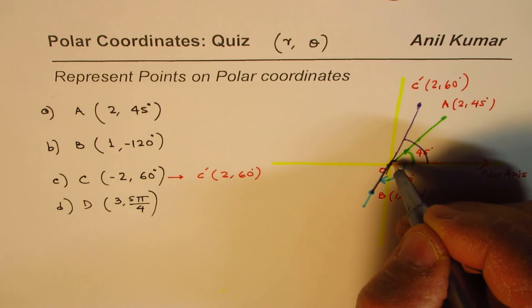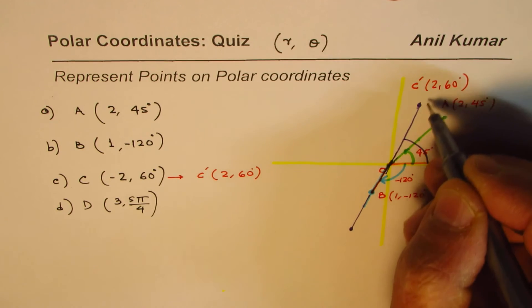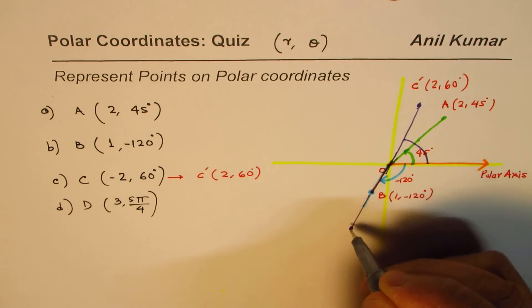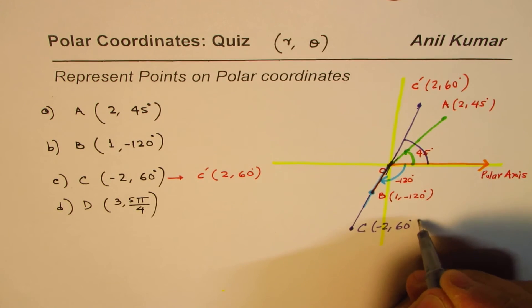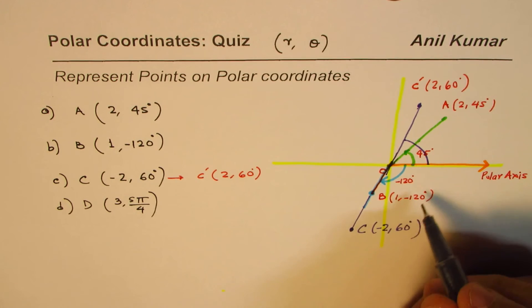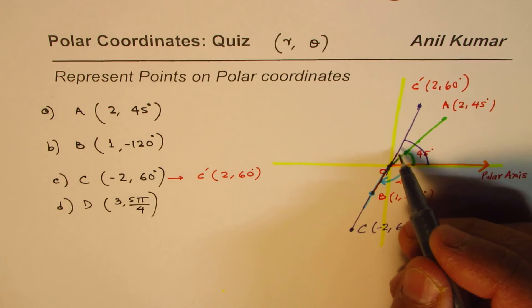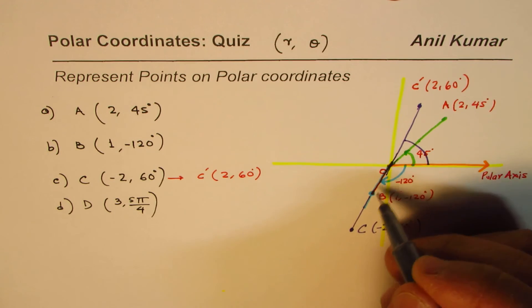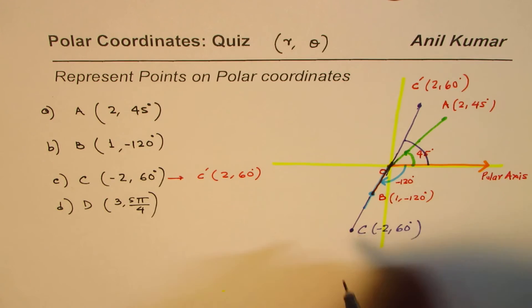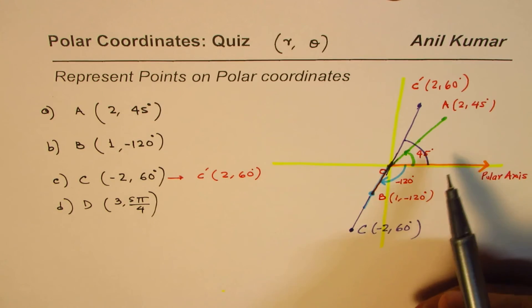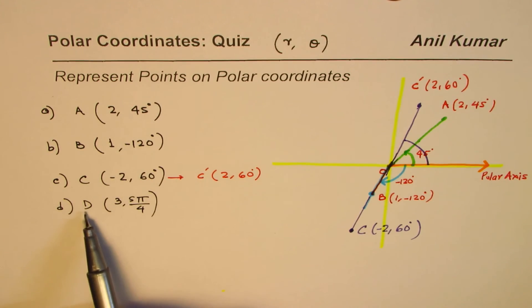So 60 degrees will be along this line, maybe here. It is not that accurate anyway. So twice the distance away, so this will be C for us, which is (-2, 60°). Do you get an idea? So because this is -120, it's kind of the same. That is how we will get the point C on our coordinate plane.